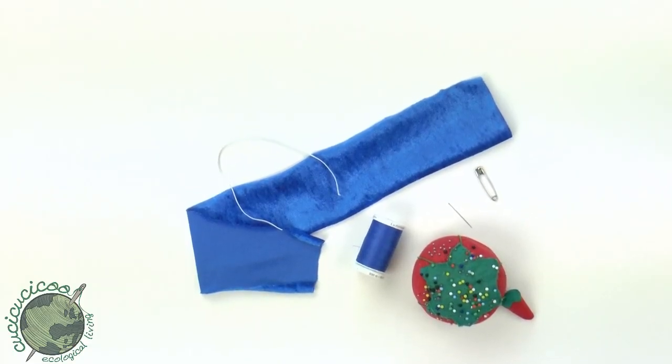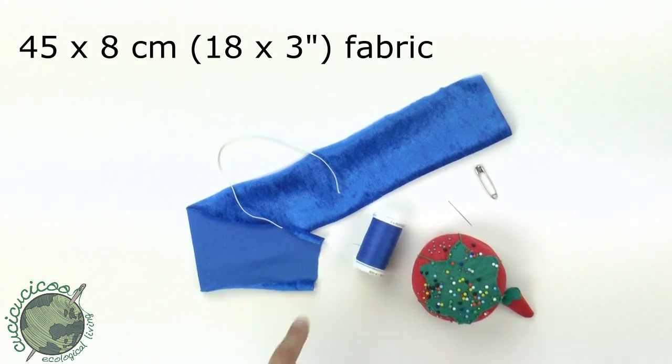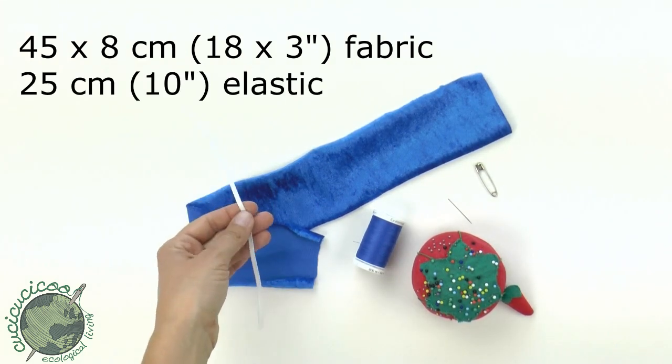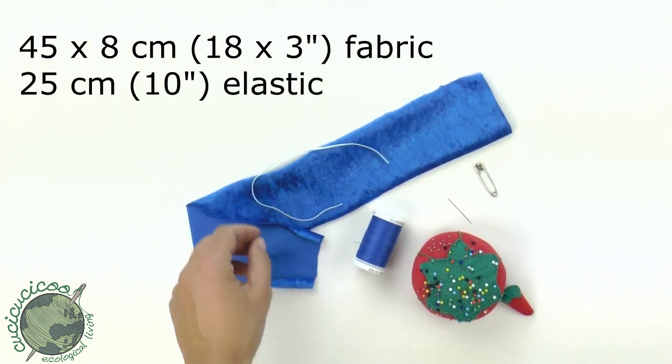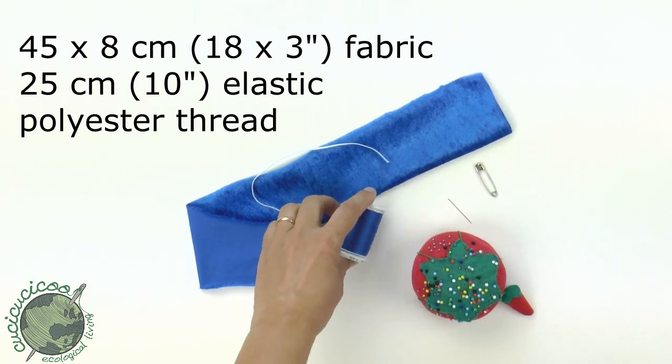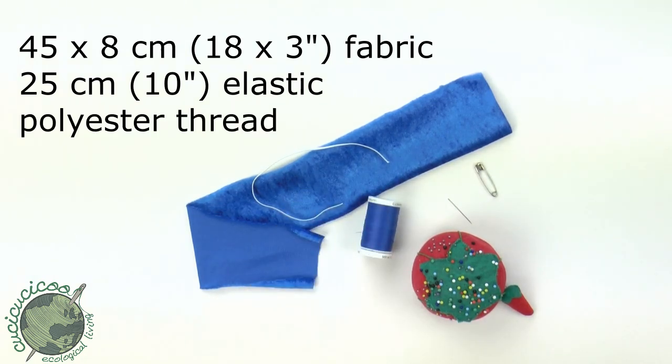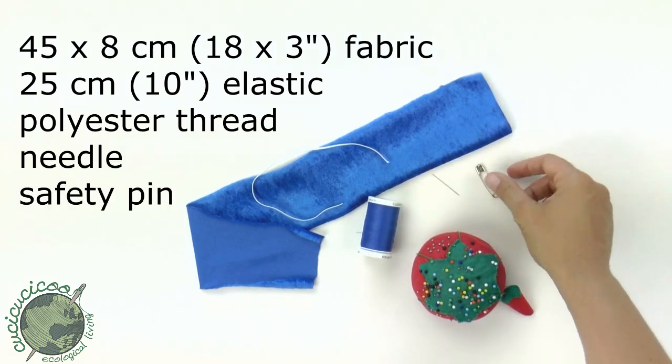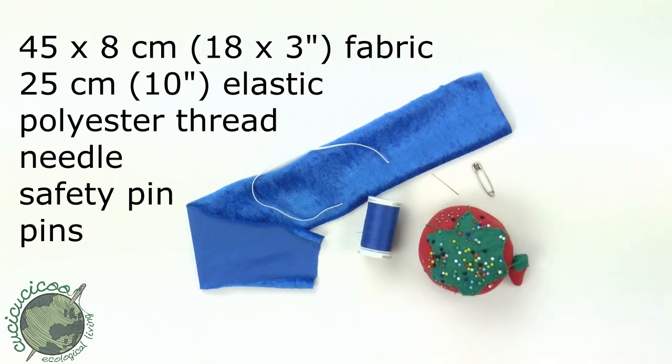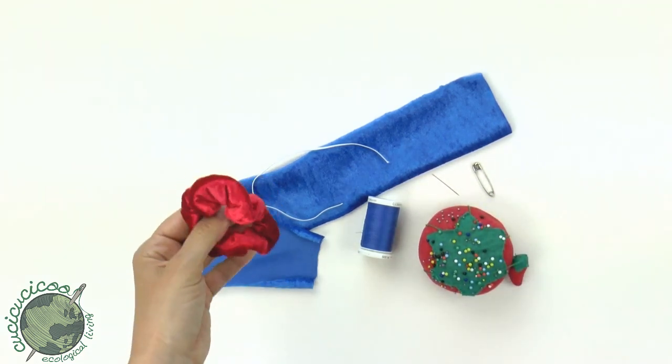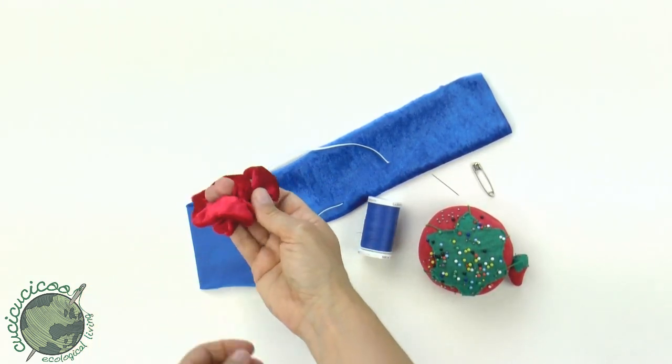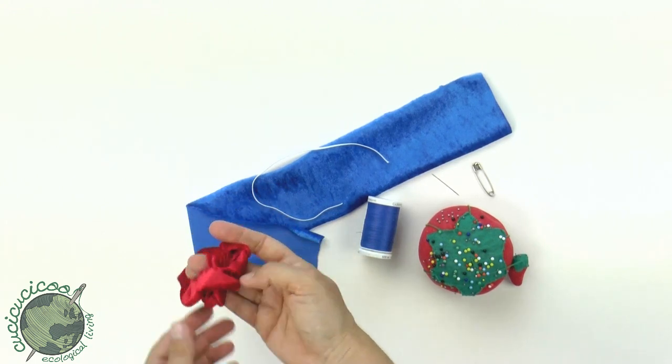Okay to make your scrunchie you need a long strip of fabric which is 45 centimeters long and 8 centimeters wide, in inches that would be 18 by about 3. You also need elastic 25 centimeters long or 10 inches, your thread - polyester Gutermann thread is my favorite, strong - a hand needle and a safety pin, your pins. These materials will let you get a scrunchie similar to this one. You can go around twice like this.